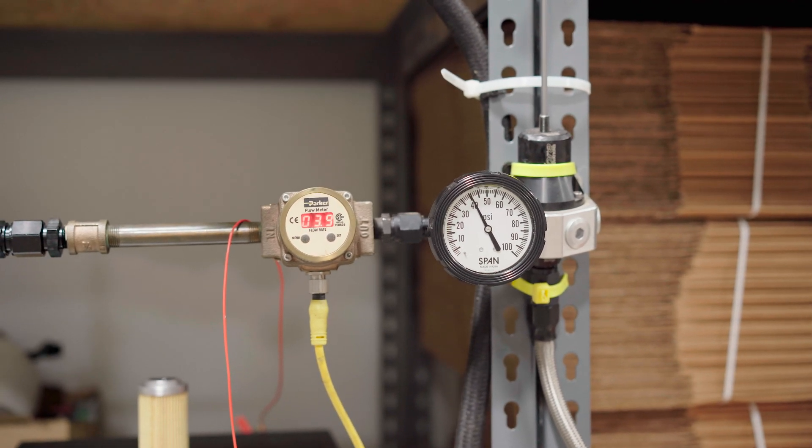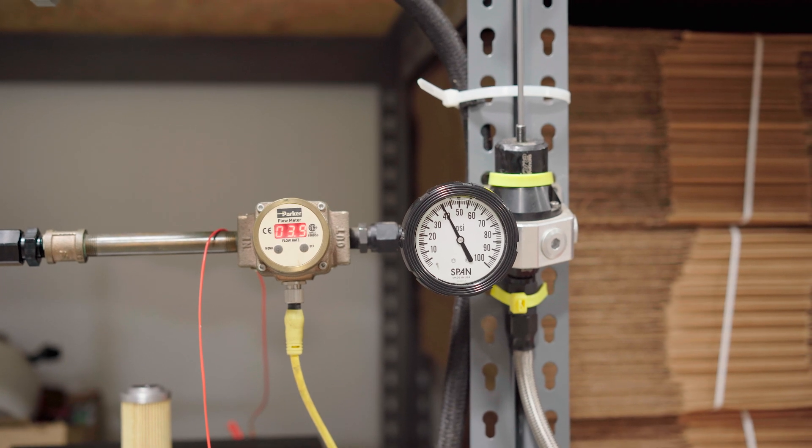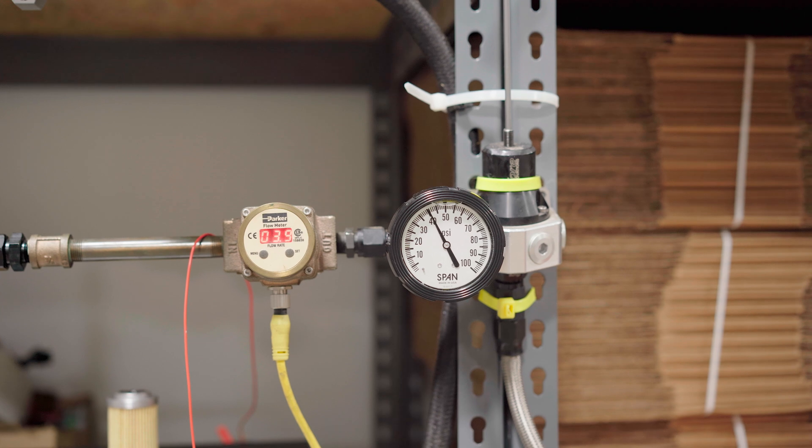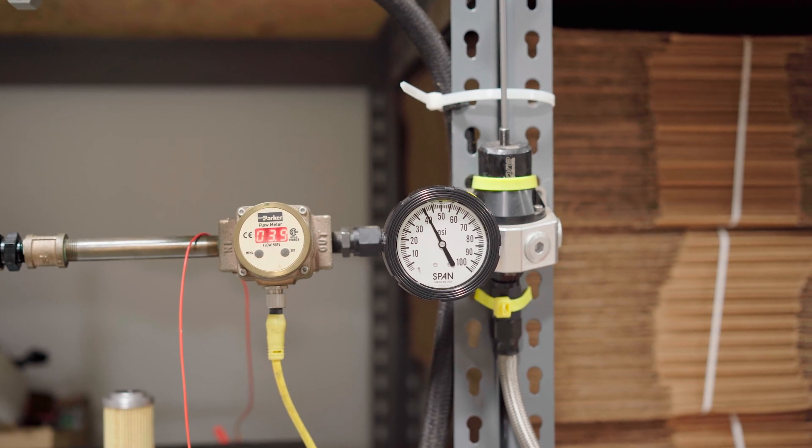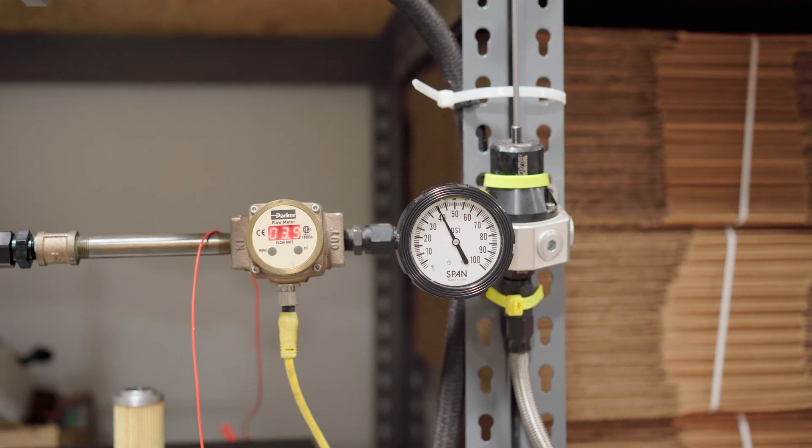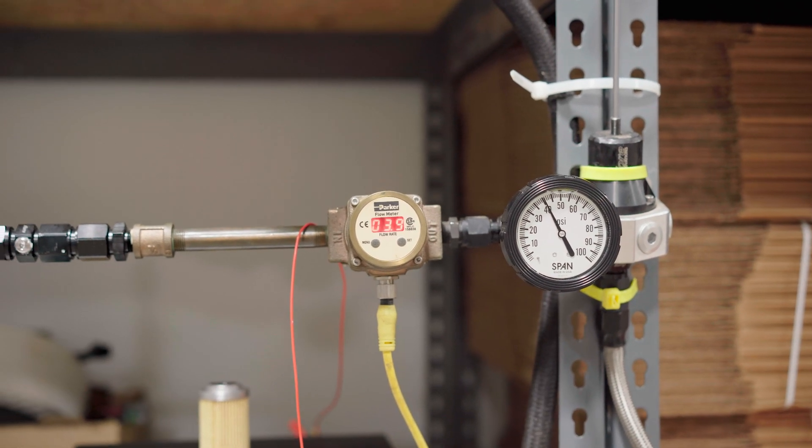Okay, we've got a little test set up here and we're going to demonstrate what happens when you let your filter get clogged. In this case, we've got the regulator set at 40 psi. If you can see the gauge just to the left of the fuel pressure gauge, that's the flow meter, and it's indicating 3.9 liters a minute, which is about 235 liters an hour.